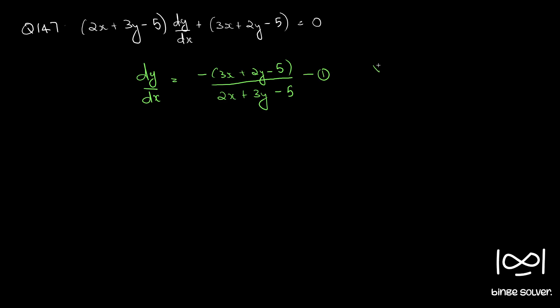For such questions, we use the substitution: small x equals capital X plus H, and small y equals capital Y plus K. Call this equation 2. For the substitution to work, we need to check that the ratio of coefficient of X in numerator to denominator is not equal to the ratio of coefficient of Y in numerator to denominator. That ratio is minus 3 by 2, which is not equal to 2 by 3. So we can apply this substitution.